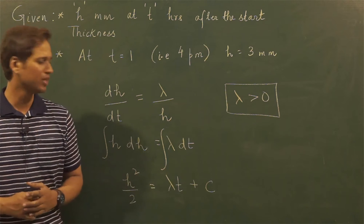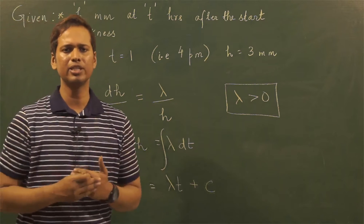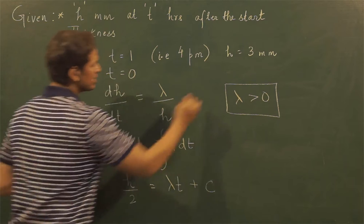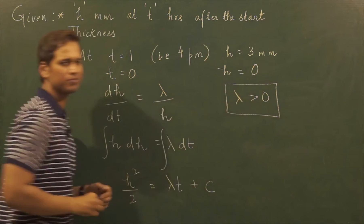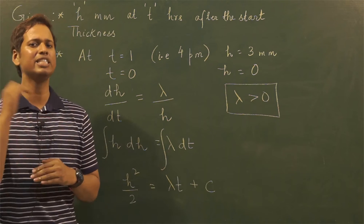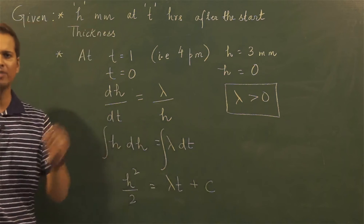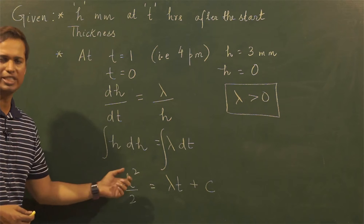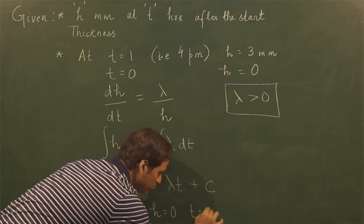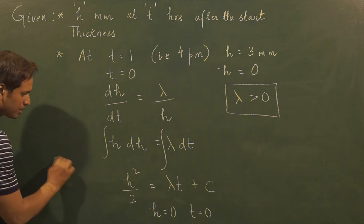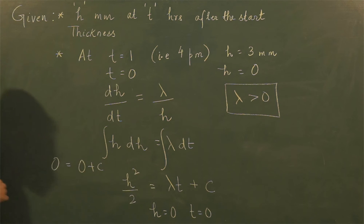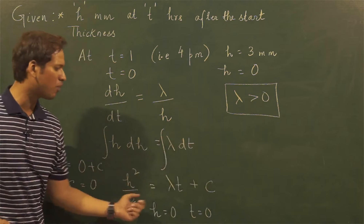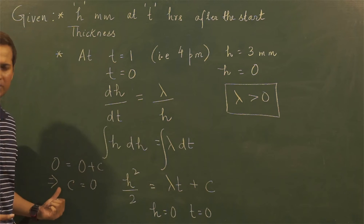To find the value of λ and c, even though it is not explicitly stated in the question, it is evident that when time was 0 the thickness of the ice was also 0 — there was no formation of ice when time initially started. We use this initial value condition, also called a boundary condition, to find c. Putting h = 0 and t = 0, the left side becomes 0 and λt becomes 0, which makes it clear that c = 0.